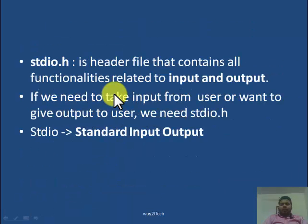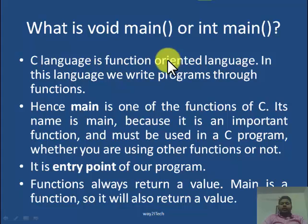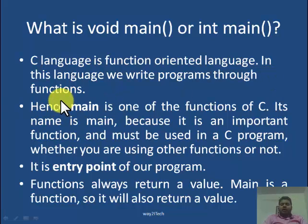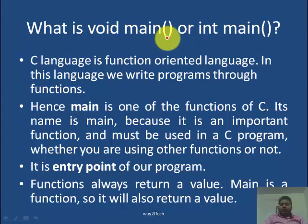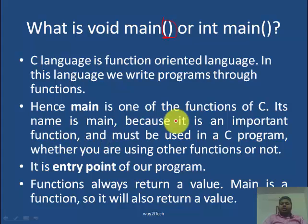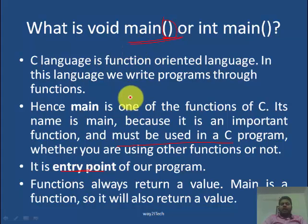The next line is void main, or sometimes it is written as int main. C language is a function-oriented language — we will write programs through functions. Functions perform some specific task. Every function has parentheses — main is having parentheses, which means main is also a function. Main is one of the functions of C. It is the main function because it is an important function and it must be specified in every C program. It is the entry point of our program — like the gate of the program from where execution starts.